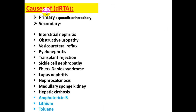Causes of distal RTA include primary causes or secondary causes due to interstitial nephritis, obstructive uropathy, vesicoureteric reflux, pyelonephritis, or drugs like amphotericin B, lithium, and cisplatin.